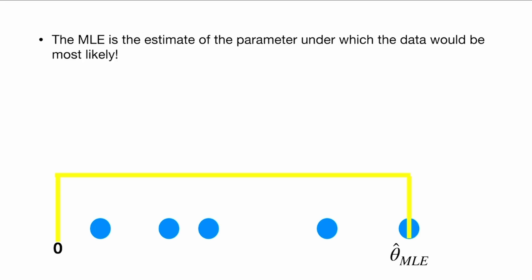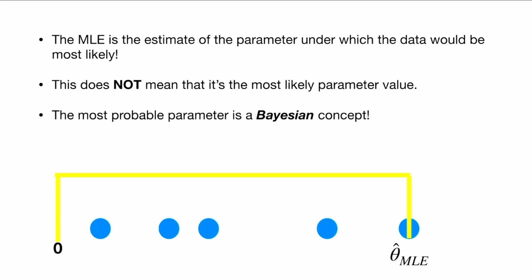The MLE is the estimate of the parameter under which the data would be most likely. This does not mean that it's the most likely parameter value. The most probable parameter is a Bayesian concept. It is not involved in finding an MLE.